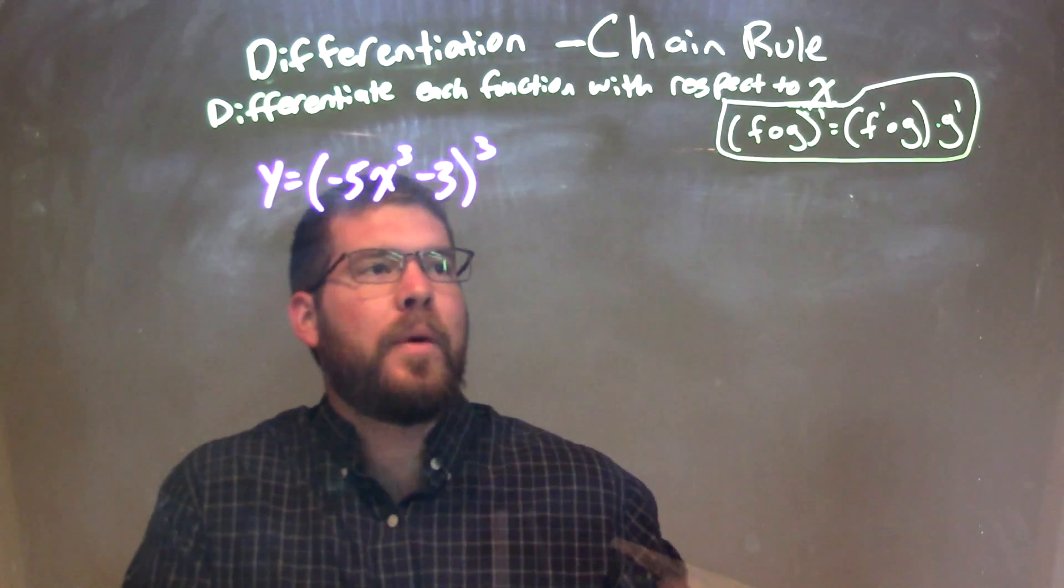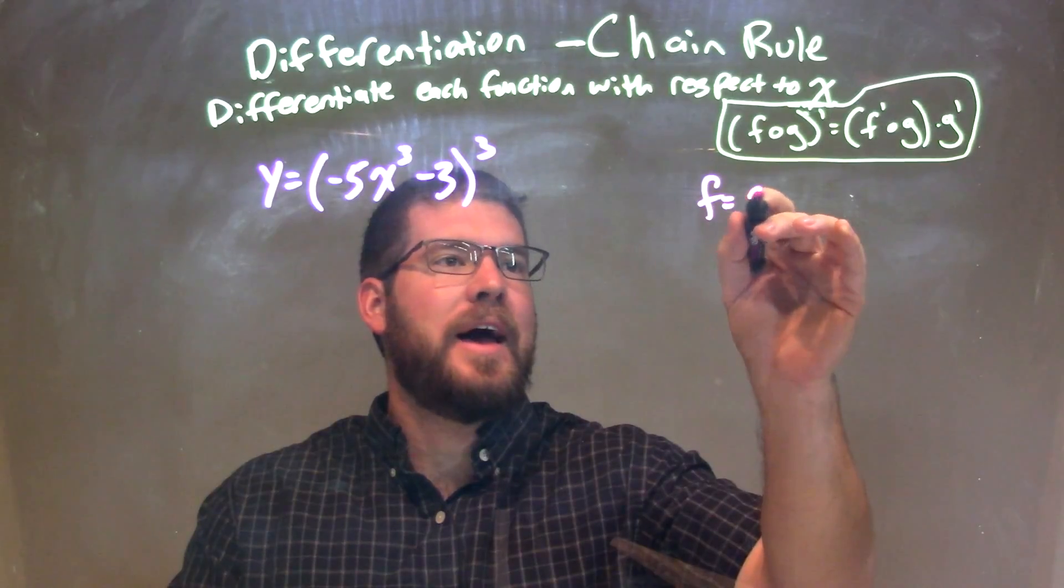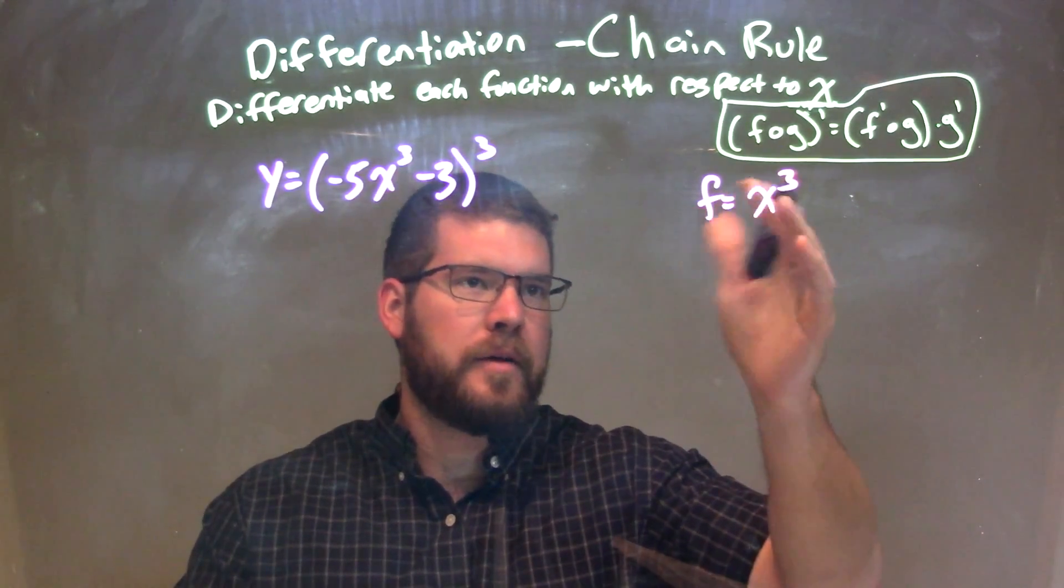I want to label my f of g here. If I label f as x to the third, whatever's in the parenthesis all to the third power.